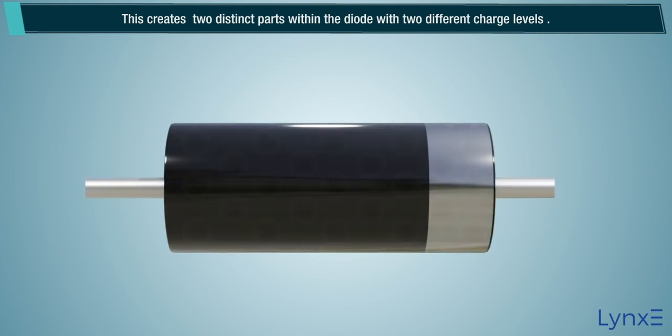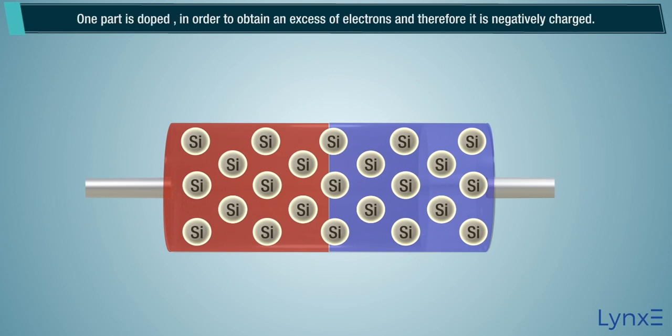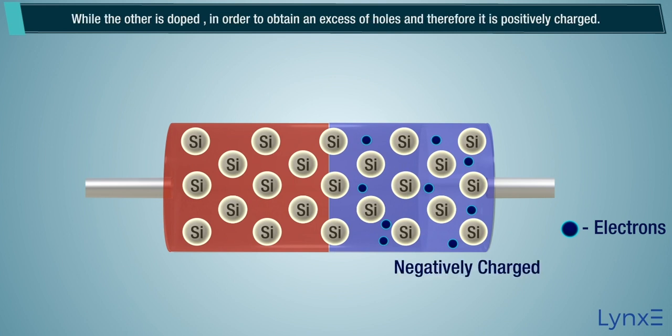This creates two distinct parts within the diode with two different charge levels. One part is doped in order to obtain an excess of electrons, and therefore it is negatively charged. While the other is doped in order to obtain an excess of holes, and therefore it is positively charged.